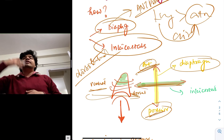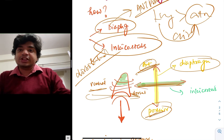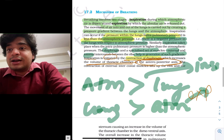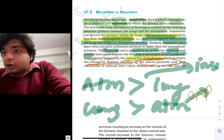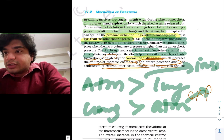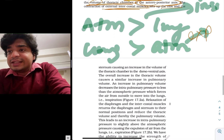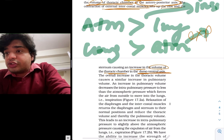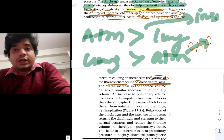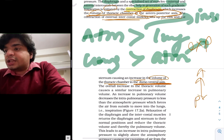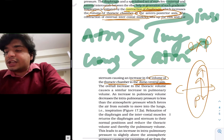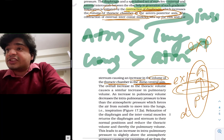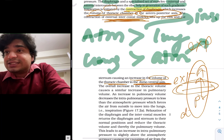The contraction of the external intercostal muscles lifts the ribs up, causing an increase in the volume of the thoracic chamber in the dorsal-ventral axis. So there are two axes to remember: the anterior-posterior increase is done by the diaphragm, and the dorsal-ventral increase is done by the external intercostal muscles.